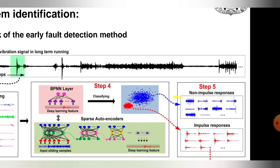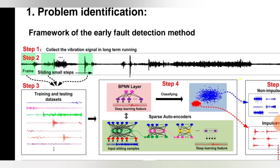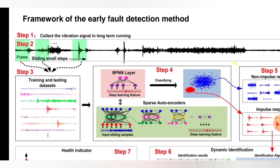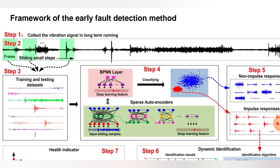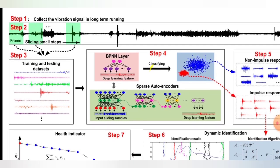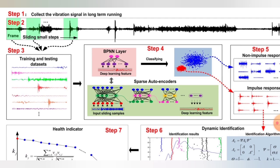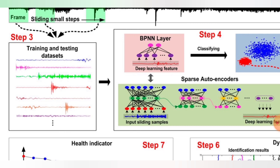Step 3: Training and testing datasets. Here you can learn the data patterns—when a failure occurs, the data pattern changes and signal transmission changes. This is the training and testing datasets shown here.